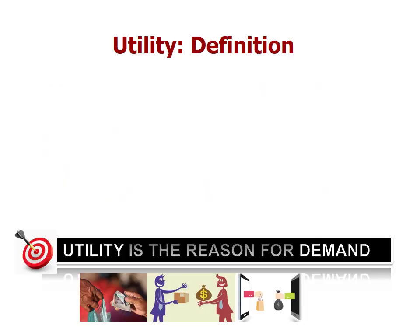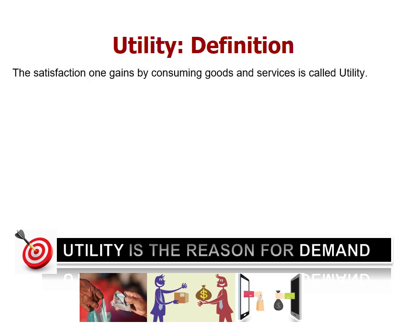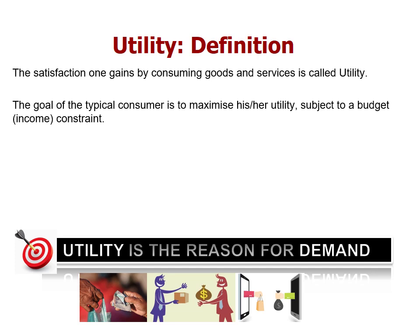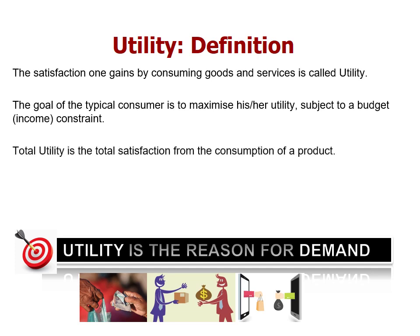Utility is the reason for demand. We go and buy things and engage in the marketplace because of the satisfaction we gain from consuming goods and services. The goal of a typical consumer is to maximize his or her utility subject to a budget or income constraint — you have an amount of money and you want to maximize your satisfaction, which is why you consume goods and services.